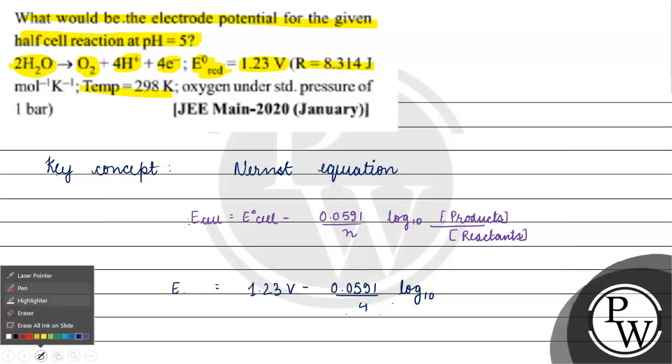What do we have in products? H plus. Because O2 is gas, it's in standard state, its activity is one, we will not consider this. Water we have in liquid state in reactants, its activity is one.